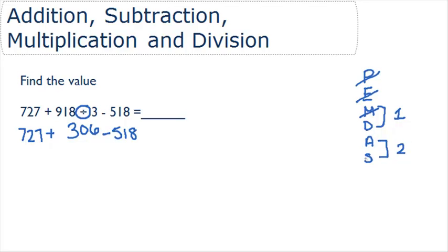Here we're going to do addition and subtraction together, moving left to right. So we start on the left side of our problem. The first thing we see is addition. So we're going to start by adding 727 to 306. This gives us a total of 1033.